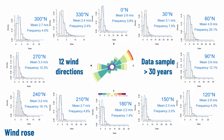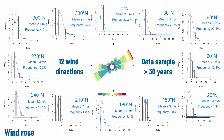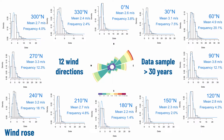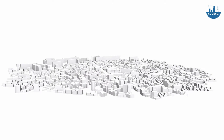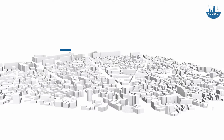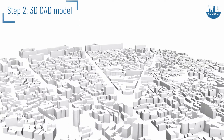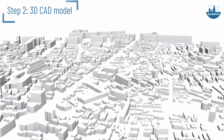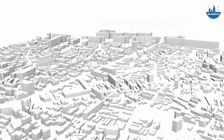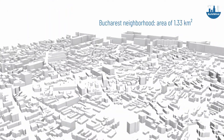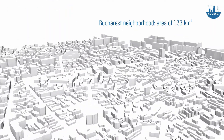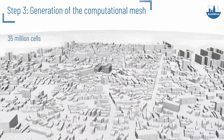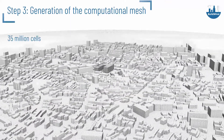Statistical distributions of wind speed and occurrence are generated. Typically 12 sectors of 30 degrees each are used. A three-dimensional model of the site and surrounding urban area is then created, and a high quality computational mesh is generated from it.